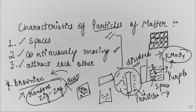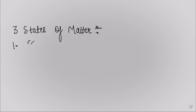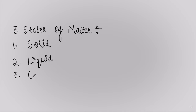Now let's understand the classification of matter. There are three states of matter: number one is solid, the second is liquid, and the third is the gaseous state. There are many differences between solid, liquid, and gases because of the particles' movement, energy, and distance between them.